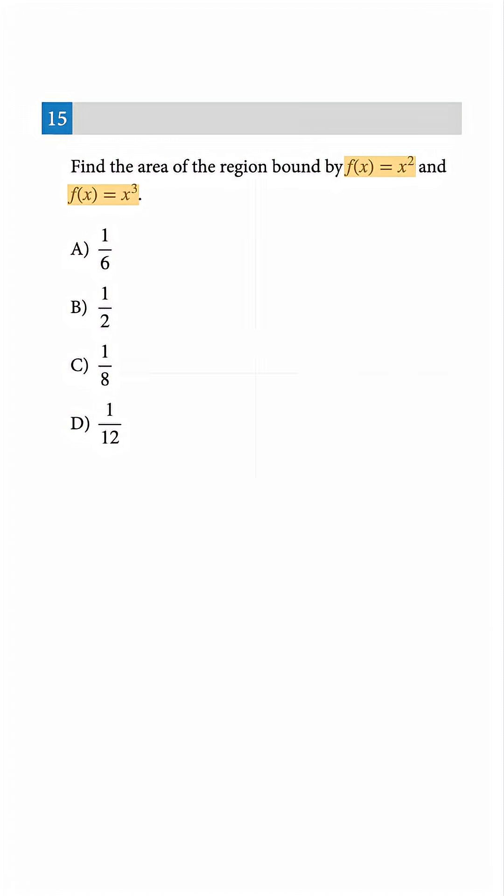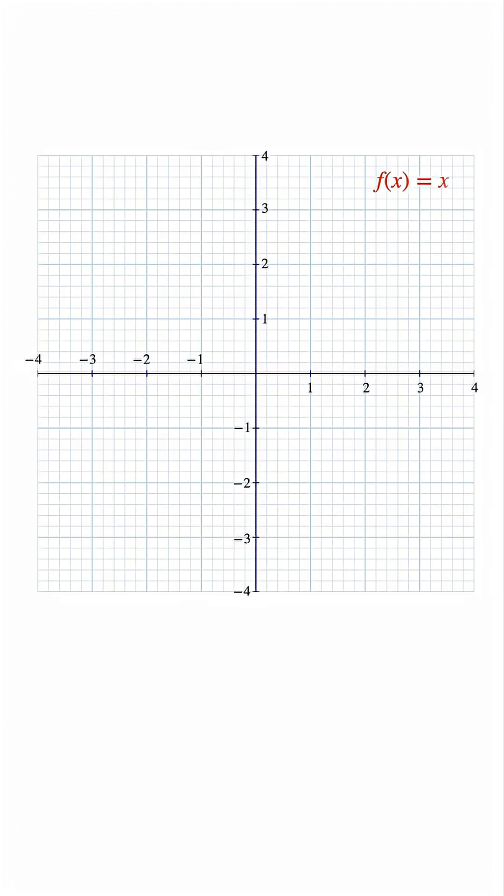First, let's sketch them using just three points each. Start with f of x equals x squared. If x is negative one, f of x is one. If x is zero, f of x is zero. If x is one, f of x is one. That makes a smooth u-shaped curve that opens upward.